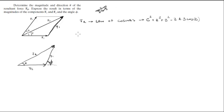So, as you can see, all we gotta do is just plug it in, plug in the numbers, so C will be FR, so it will be FR squared is equal to F1 squared plus F2 squared minus F1 times F2.